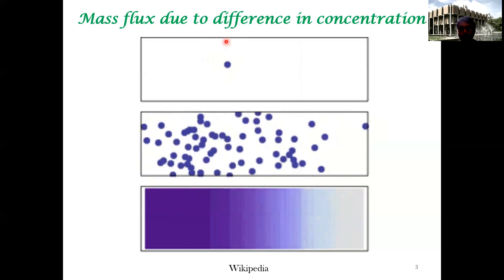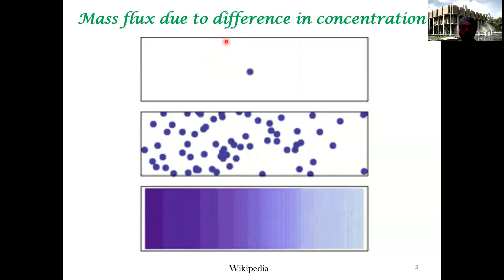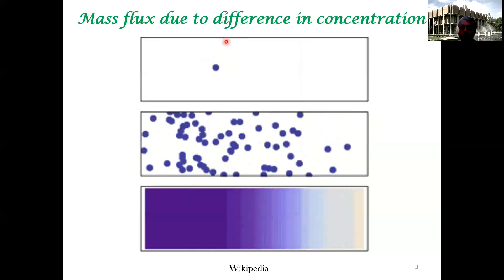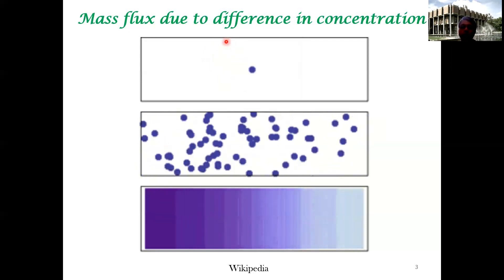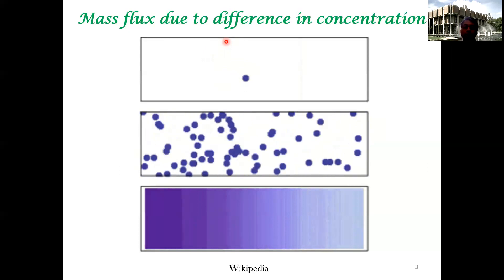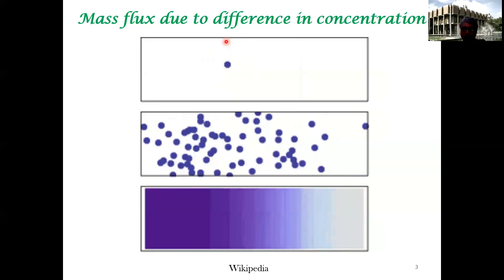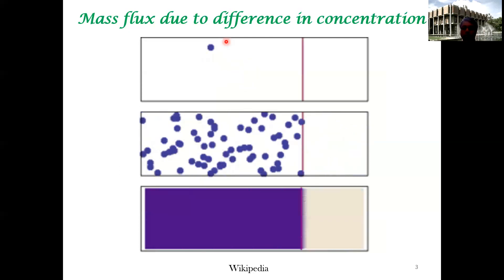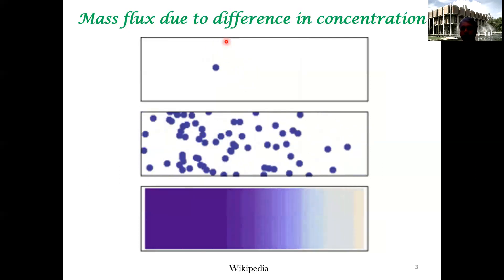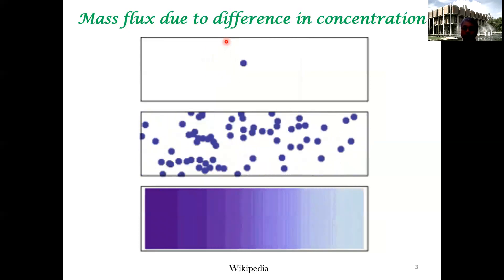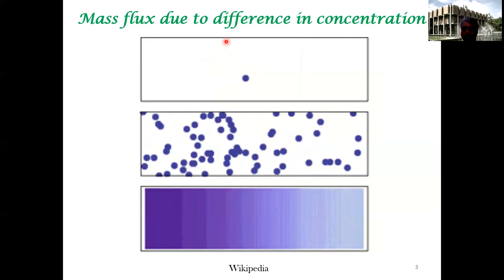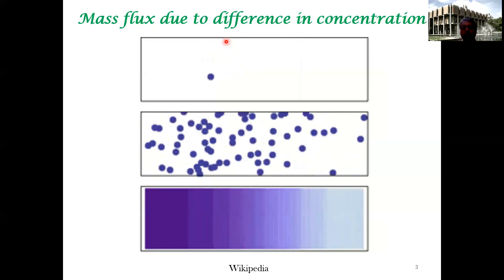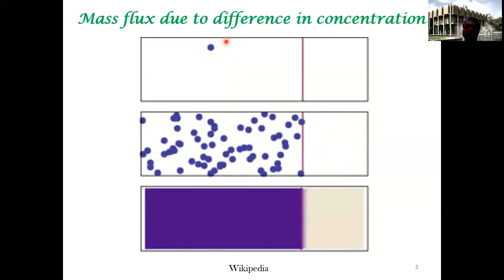We have seen three different driving forces. Temperature differential gives rise to heat flux, which is very similar mathematically to concentration difference giving rise to mass flux. Fluid flow is slightly more complex, but the driving force is pressure difference, which gives rise to fluid flow and momentum flux.